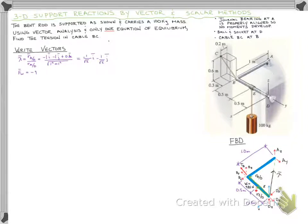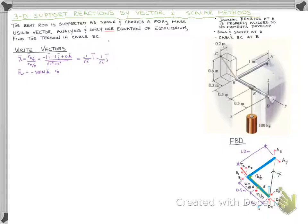Now let's look at the force vector and position vector for the applied 981 newtons. That load has no x or y component — it just hangs down in the negative z direction. So we write it simply as negative 981 newtons in the k direction. The position vector goes from D to E: no movement in x, no movement in z, and negative 5 meters in the y direction. So the position vector is just negative 5j.